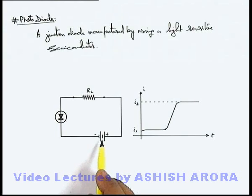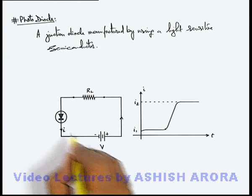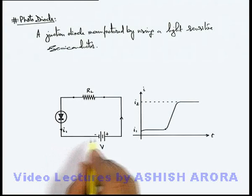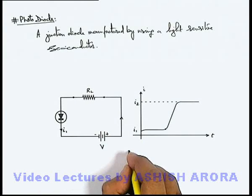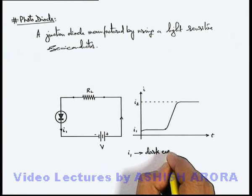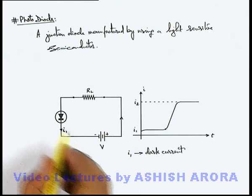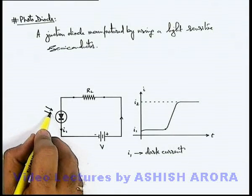And in this situation of forward biasing, a current i₁ flows through the circuit, and this i₁ we term as dark current, because right now we consider that the diode is kept in dark. And when some external light is...